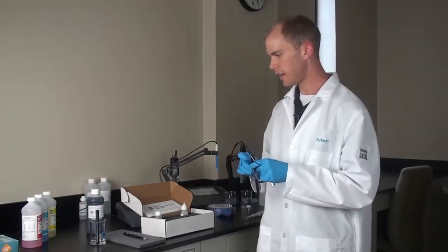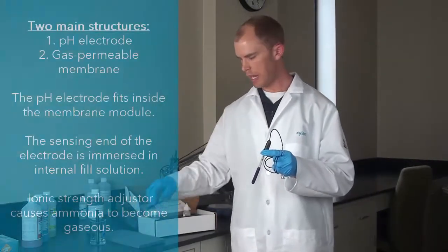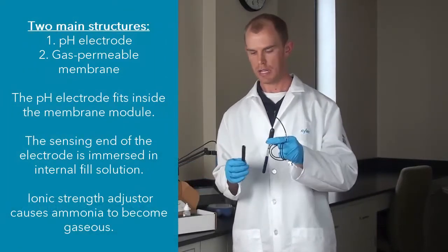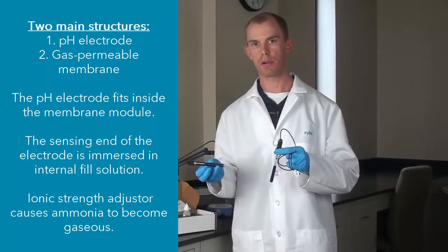The Ammonia ISE has two main structures: a pH electrode and a membrane module.